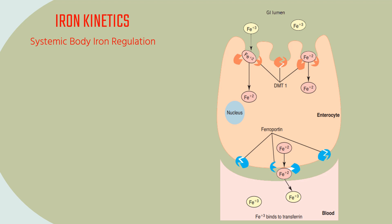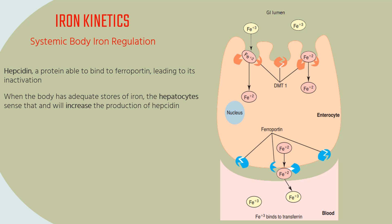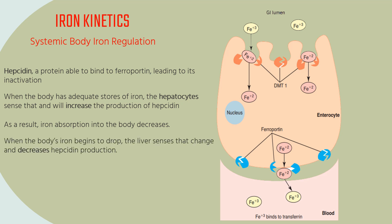When the body has adequate stores of iron, the hepatocytes sense that and will increase the production of hepcidin, a protein able to bind to ferroportin, leading to its inactivation. As a result, iron absorption into the body decreases. When the body's iron begins to drop, the liver senses that change and decreases hepcidin production. As a result, ferroportin is once again active and able to transport iron into the blood.